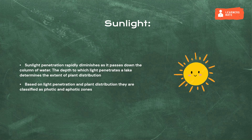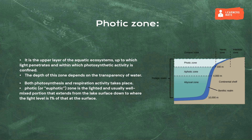Based on light penetration and plant distribution, they are classified as photic and aphotic zones. The photic zone is the upper layer of the aquatic ecosystem up to which light penetrates and within which photosynthetic activity is confined. Both photosynthesis and respiration activity take place. The photic or euphotic zone is the lighted and usually well-mixed portion that extends from the lake surface down to where the light level is 1% of that at the surface.